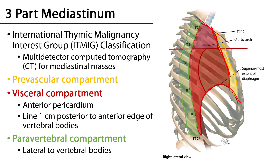Everything behind that, all the way back to a boundary one centimeter posterior to the anterior edge of the vertebral bodies, is the visceral compartment. The visceral compartment contains the heart within the pericardium, the bronchi, the great vessels, and so on.